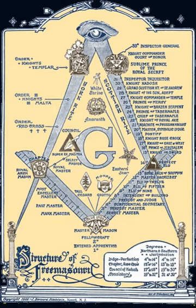In other countries, notably England, Scotland, Ireland, and many of the countries of the Commonwealth, a large number of standalone orders and degrees exist without the umbrella organization of a rite. Some of these Masonic bodies use numbers as an informal way of referring to or identifying the degrees they confer, but the most important and therefore highest degree is always the third, or degree of Master Mason.